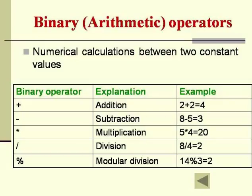This is an overview. We have addition indicated by the plus sign, subtraction, multiplication, division and modular division. An example has been given for each of these operations. Modular division is something in which you do not get the quotient as a result, but the remainder of the division as a result. That is the difference between division and modular division. Division is one in which you get the quotient of the division as a result. When you want to see the remainder, you go in for modular division.